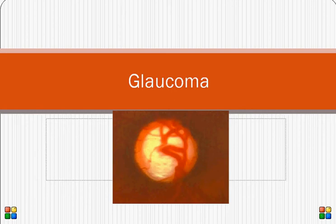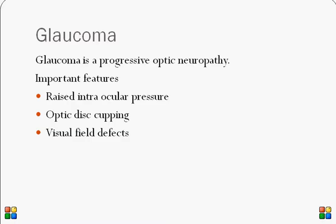Welcome to another topic in ophthalmology: glaucoma. Glaucoma is a chronic progressive optic neuropathy which is irreversible. It can't be cured, but we can try to prevent the progression of glaucoma by controlling the intraocular pressure. This is something like blood pressure — you can't cure it, but you can keep it under control.